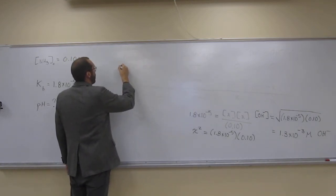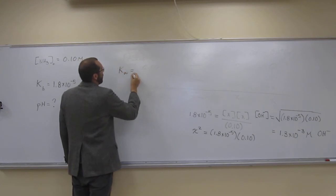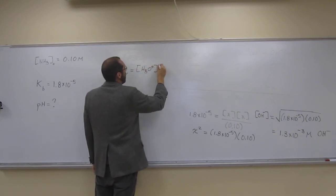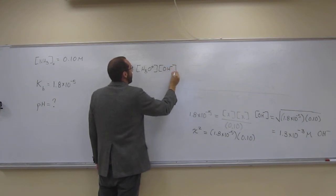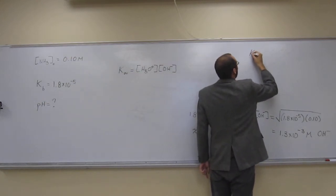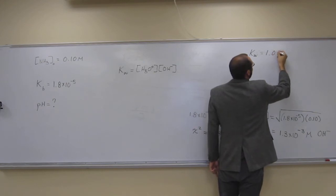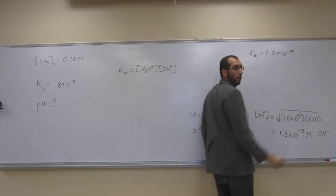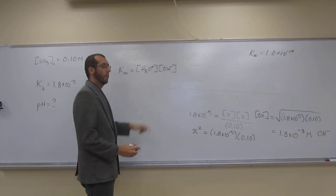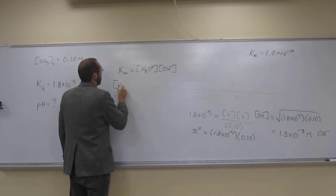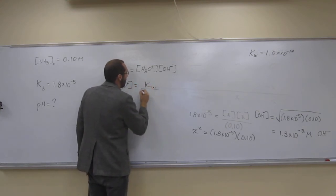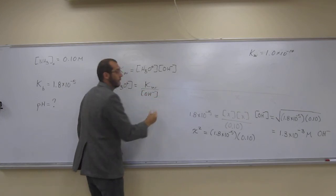So remember, Kw equals the hydronium ions times OH concentration. So we can say the hydronium ion concentration. So we can figure out from this the hydronium ion concentration. So we just say the hydronium ion concentration equals Kw divided by the concentration of OH minus.